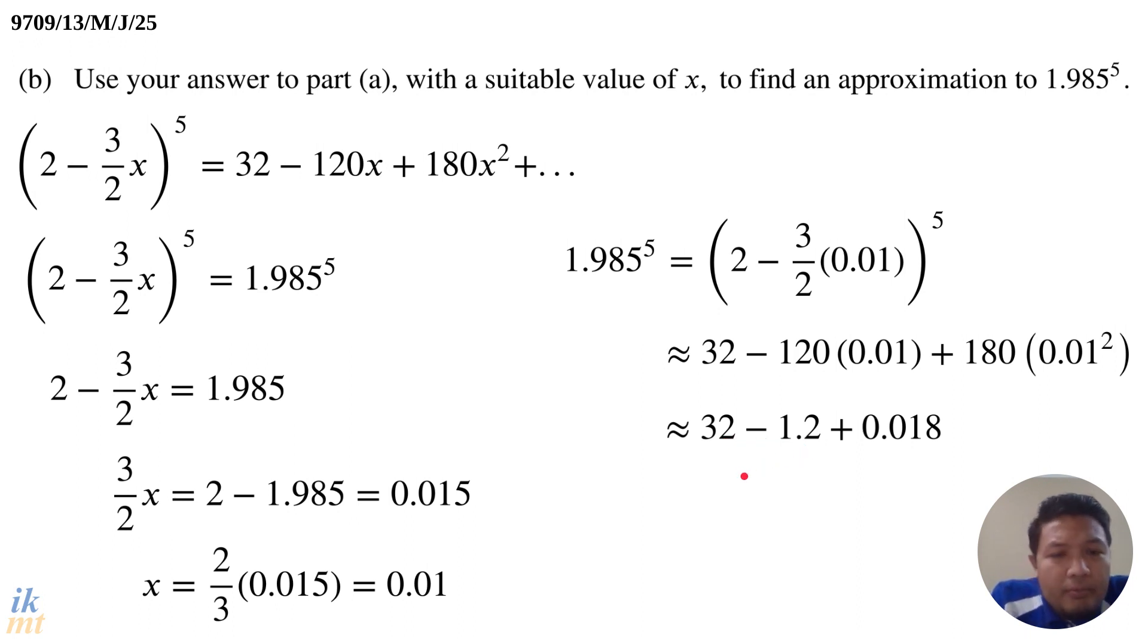And 32 minus 1.2, that's very easy. That's going to be 30.8. And when you have 30.8 and you add 0.018, the numbers add very naturally. You're adding just zeros to all the places really. So it becomes very simple, and you get approximately 30.818. And this is quite a good approximation. If you press your calculator, I think you will get a value that is actually close to this. The good thing about this question is that after you do all of this and you get this value, you can actually check with your calculator. Just type in 1.985^5. If it's very close to this, and I believe it is, then that means you're right and you can be confident that you did this correctly. Good job.